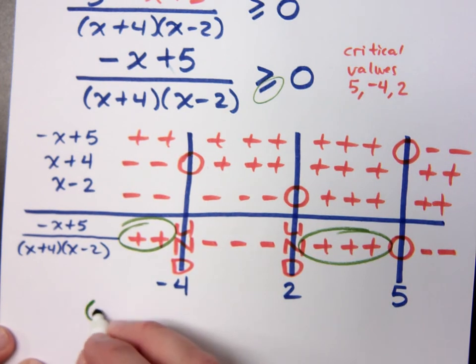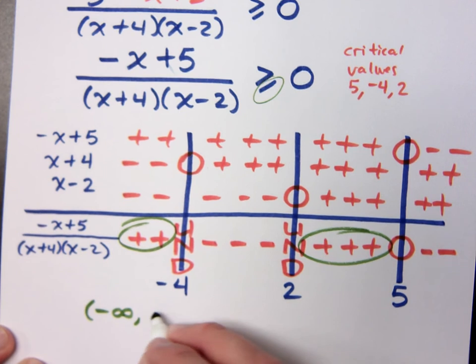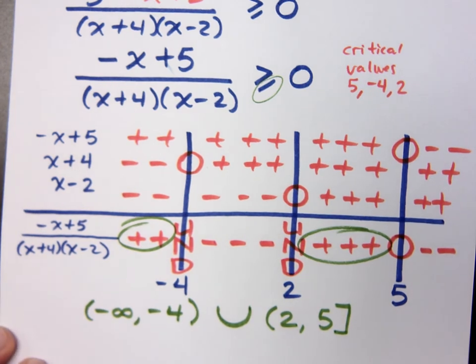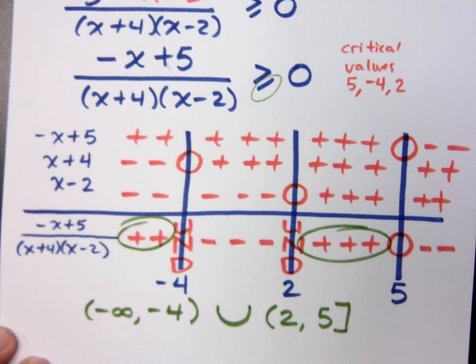So how do you translate this guy, what you see here, into interval notation, keeping in mind that you have the equal to part? Negative infinity to negative 4. Negative infinity to negative 4 with what? Parentheses. I'm going to join that, union that with what? Open parentheses 2 to what? 5. But here, since I get to be equal to, I'm going to put a closed bracket on that guy.